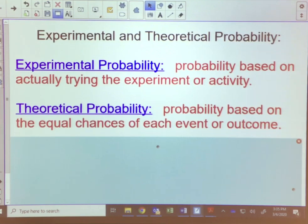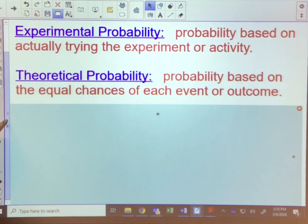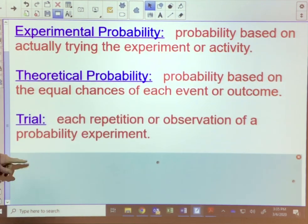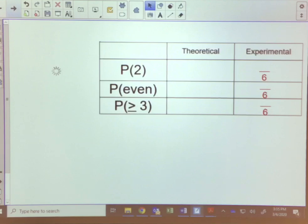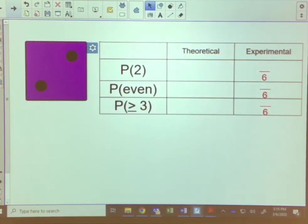That's the theoretical probability, that's what's supposed to happen. And then when we're doing these, each trial is a repetition or observation of the probability experiment. We're going to be doing some trials today. Give you a minute to copy that down and then we'll move on.